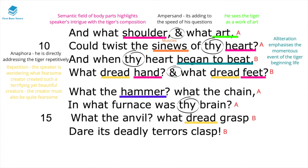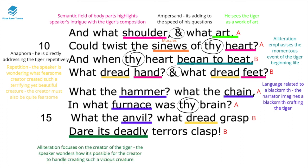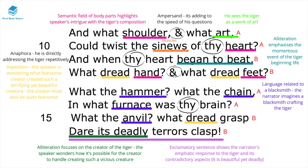In line 13 he refers to the hammer, then the chain, then in line 14 the furnace, and line 15 the anvil — all language related to a blacksmith. The narrator imagines a blacksmith crafting and creating this tiger. The alliteration in 'dare its deadly' focuses on the creator of the tiger, and the exclamatory sentence 'dare its deadly terrors clasp' shows the narrator's emphatic response to the tiger's contradictory aspects — beautiful yet deadly.